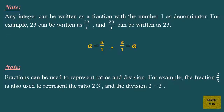Note: any integer can be written as a fraction with the number 1 as denominator. For example, 23 can be written as 23 over 1, and 23 over 1 can be written as 23. In general, a equals a over 1, and a over 1 equals a. Note: fractions can also be used to represent ratios and division. For example, the fraction 2 over 3 is also used to represent the ratio 2 to 3, and the division 2 divided by 3.